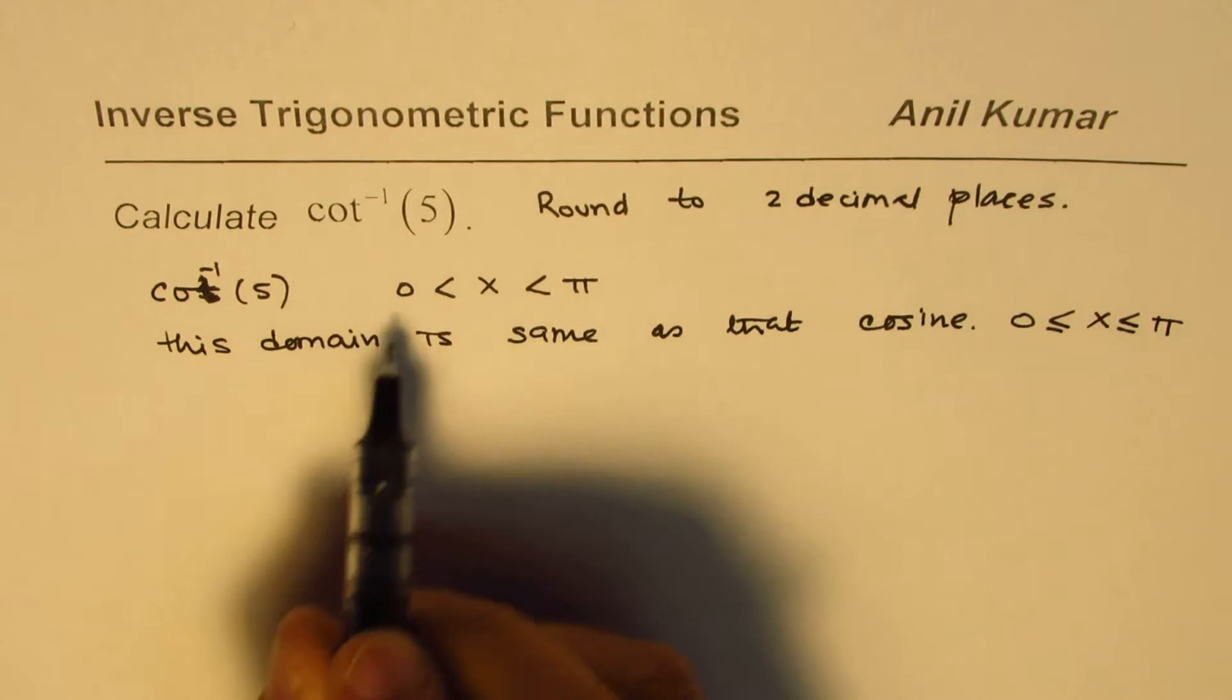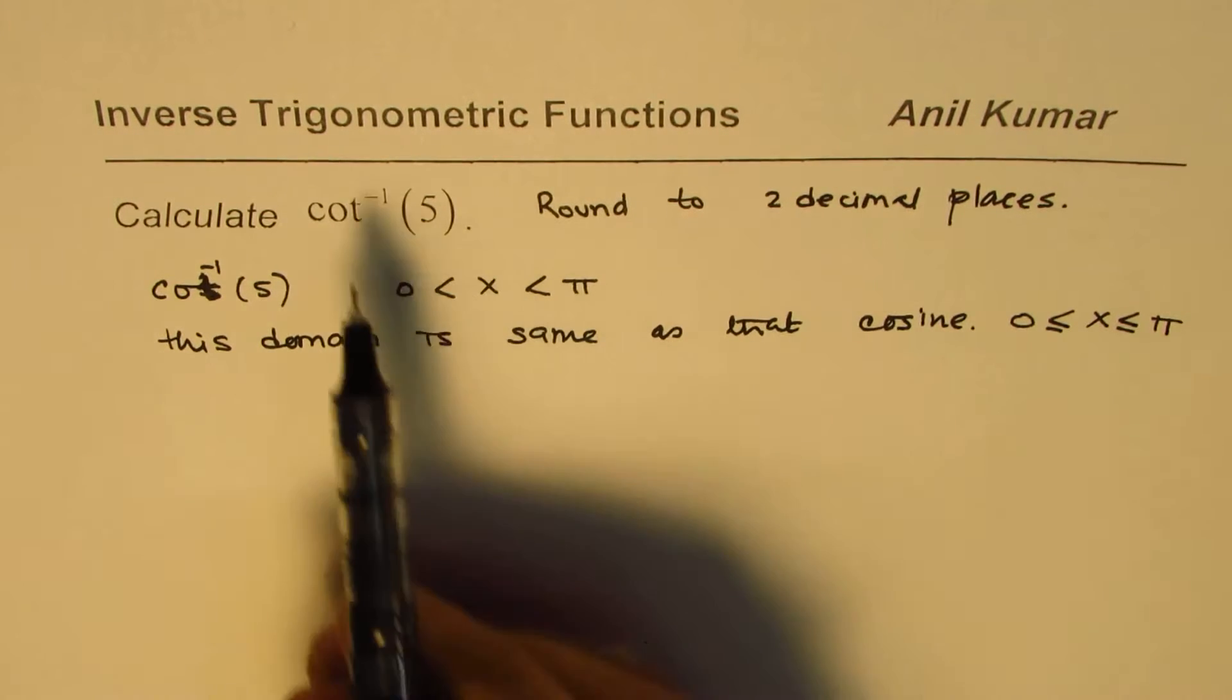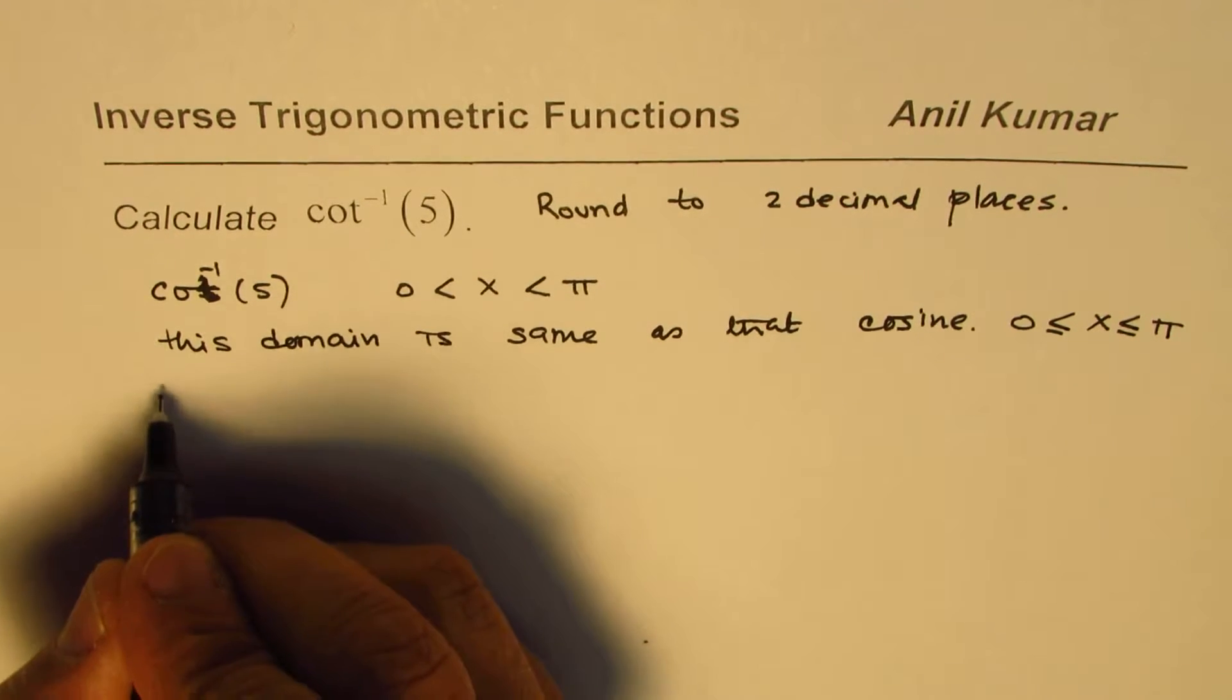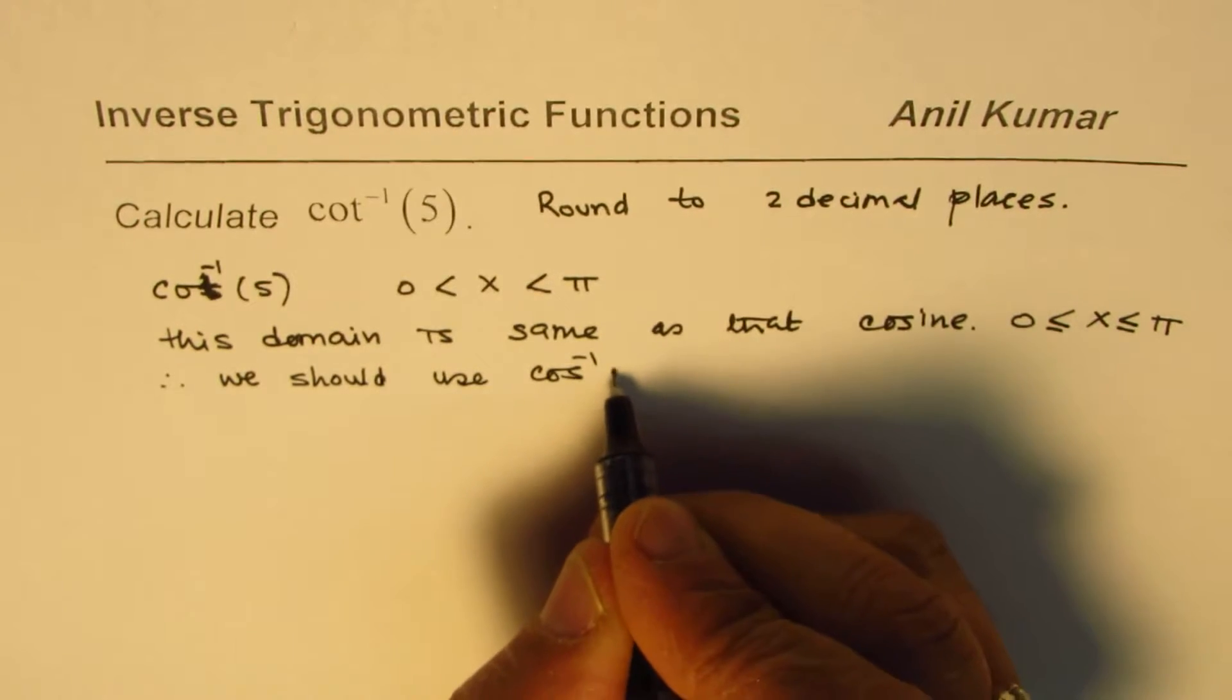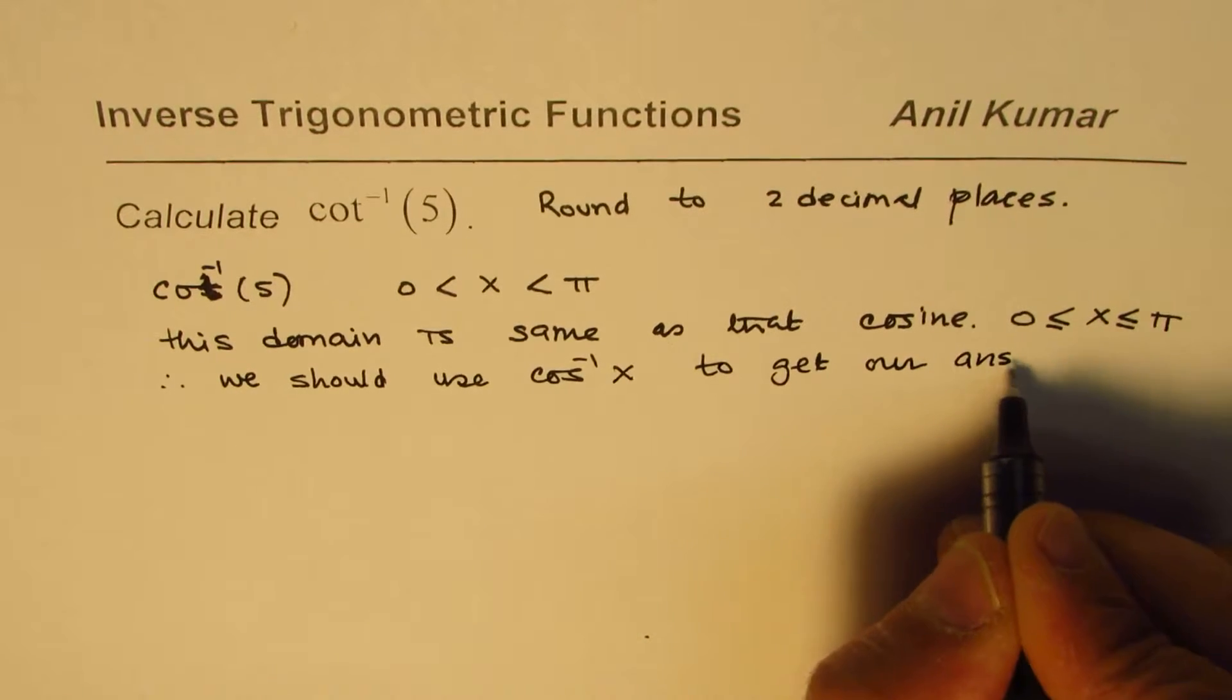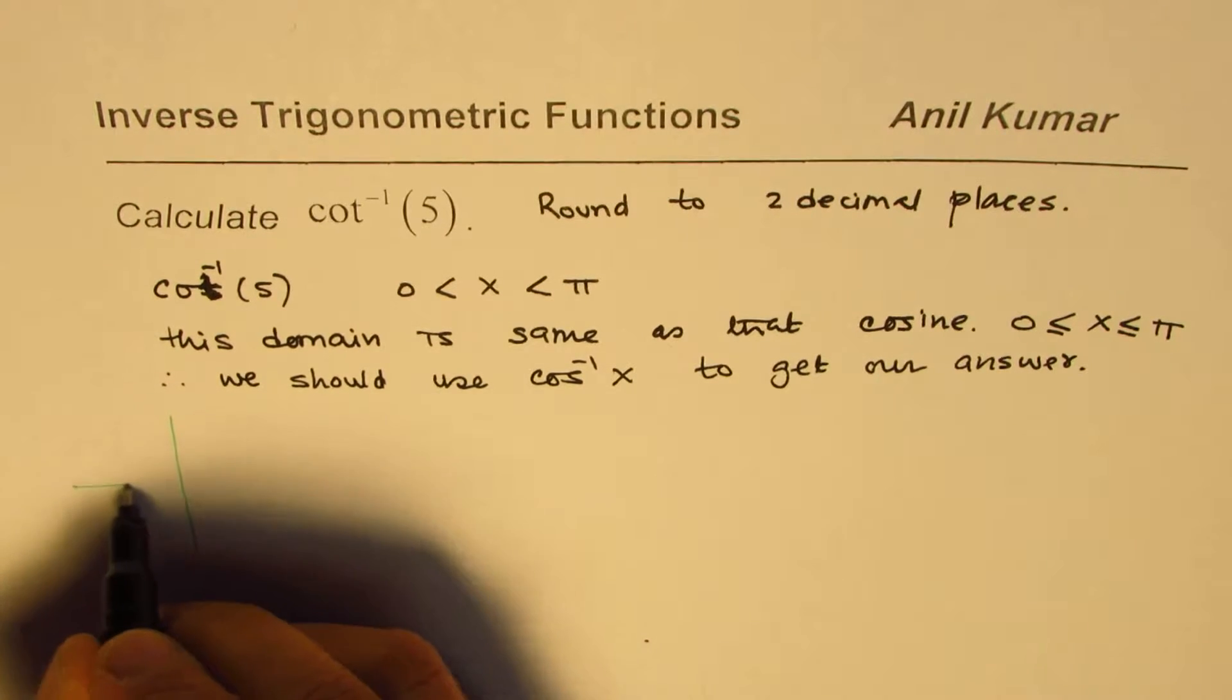The domain for cot⁻¹ is exactly the same, or a subset, of the cosine function domain. Therefore we should use cos⁻¹ to find this value. We should use cos⁻¹ of some value to get our answer.